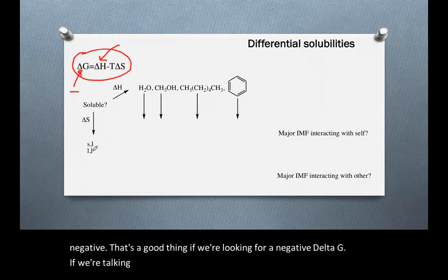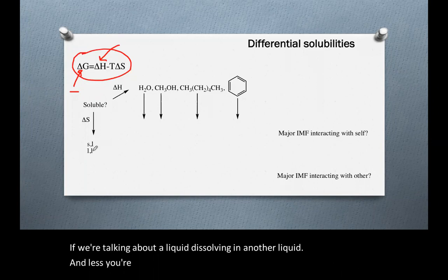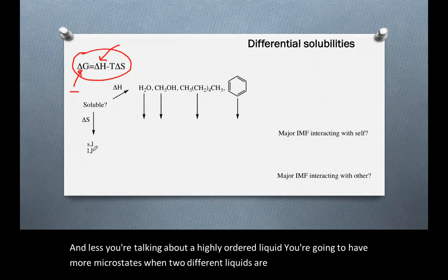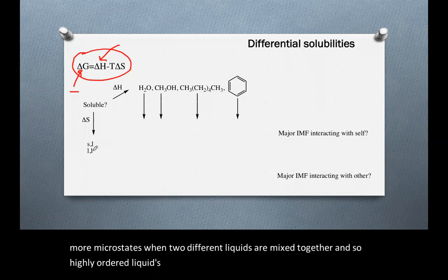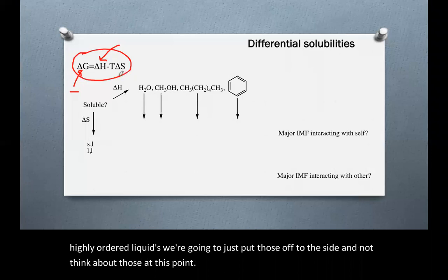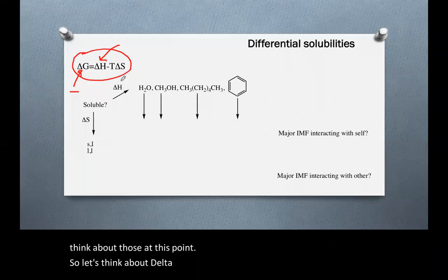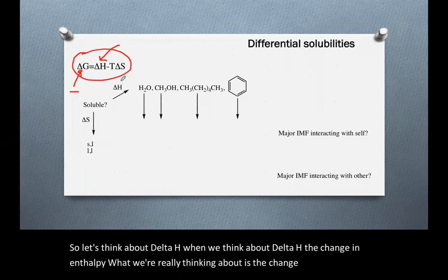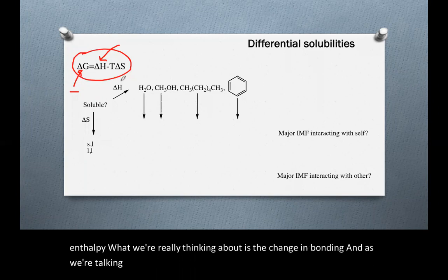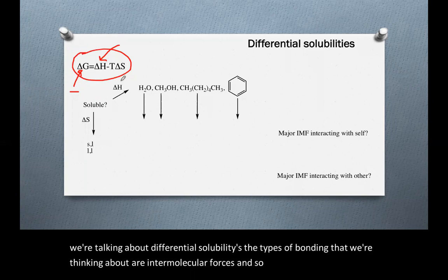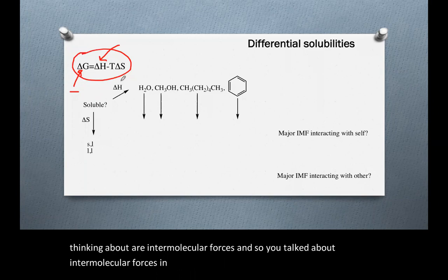If we're talking about a liquid dissolving in another liquid, generally you're going to have more microstates when two different liquids are mixed together — unless you're talking about a highly ordered liquid, which we'll set aside for now. When we think about delta H, the change in enthalpy, what we're really thinking about is the change in bonding. As we talk about differential solubilities, the types of bonding we're thinking about are intermolecular forces: hydrogen bonding, dipole interactions, induced dipole interactions, and ionic interactions.